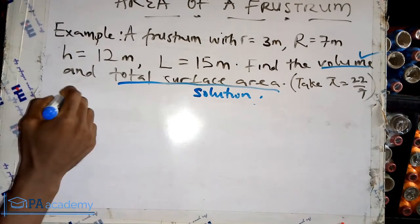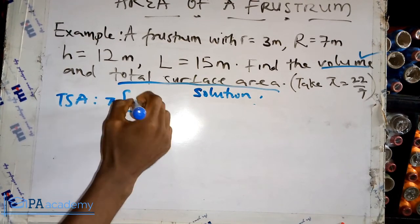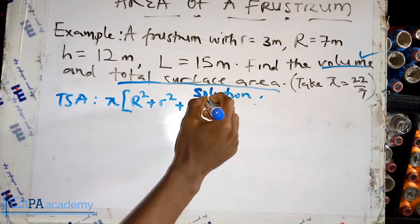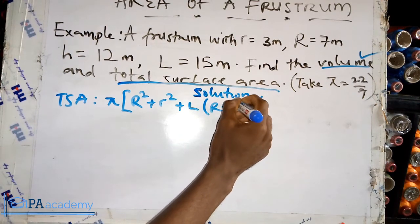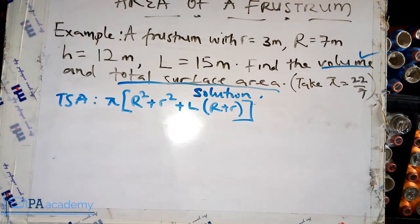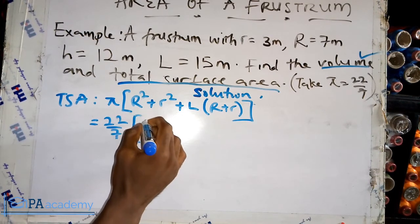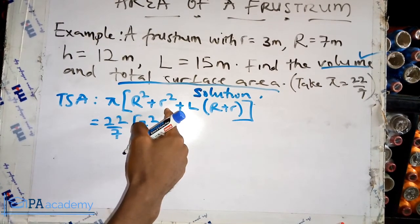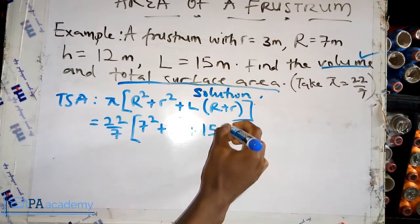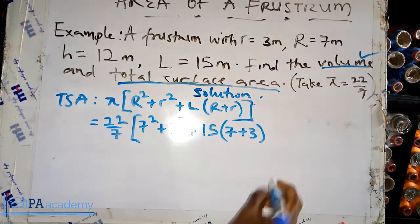To calculate the total surface area of a frustum, the formula is: pi open brackets capital R squared plus small r squared plus l into brackets capital R plus small r, close brackets. Substituting values: pi is 22 over 7, R is 7 so that's 7 squared, plus small radius is 3 so that's 3 squared, plus length l is 15, into brackets 7 plus 3.